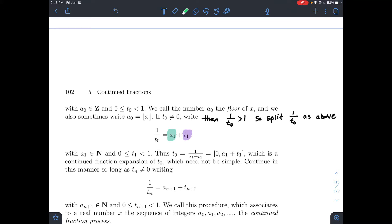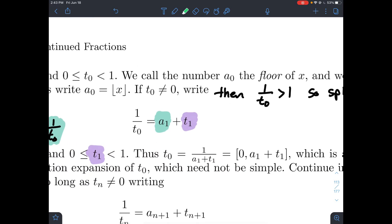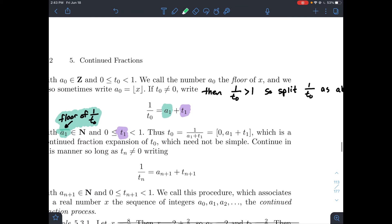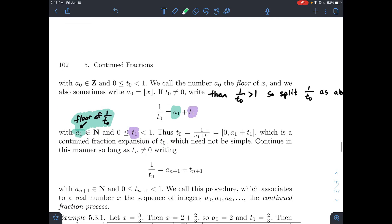Again, a1 is some natural number now, and t1 is just some number between 0 and 1. So t0 is 1 over a1 plus t1, and I've kind of got this continued fraction form here already. So this is how we're building this. And what we're going to do is we're going to continue. We're going to play around with 1 over t1 next and split it into a2 plus t2, and etc.